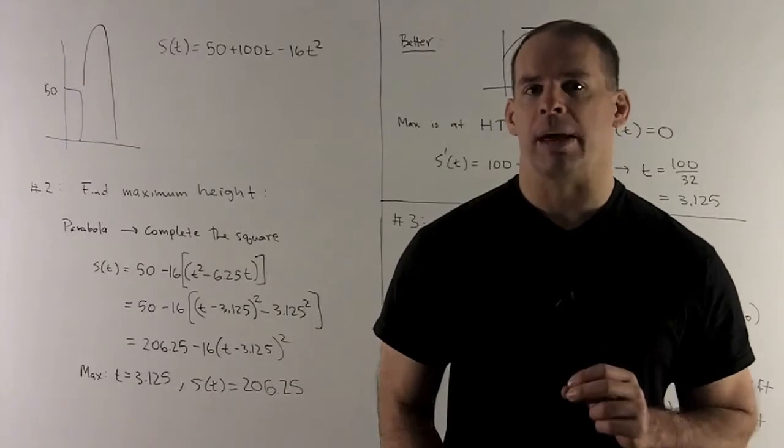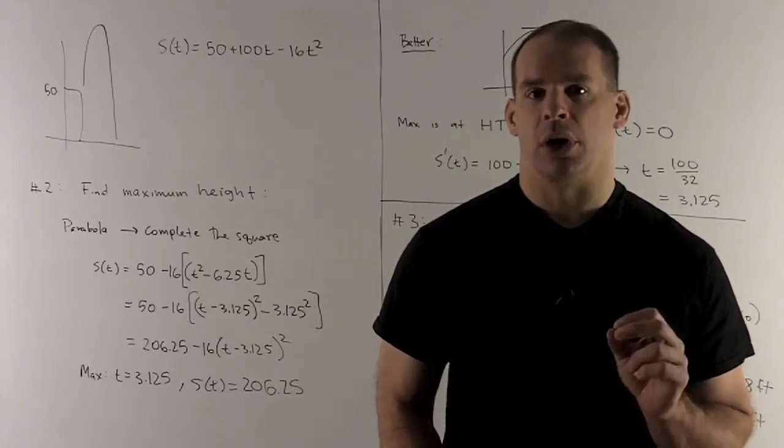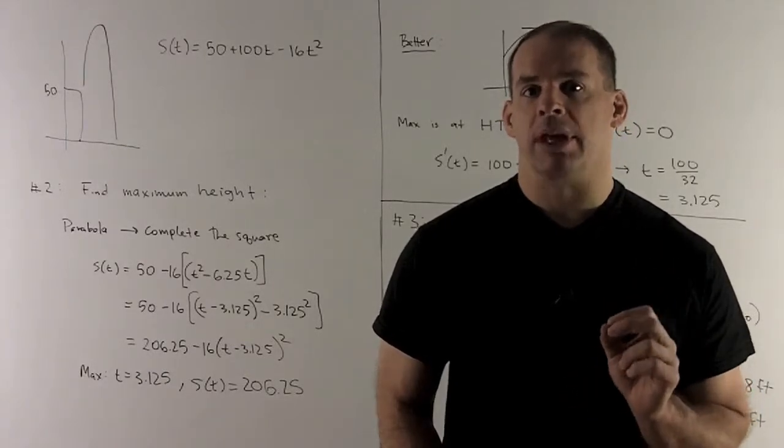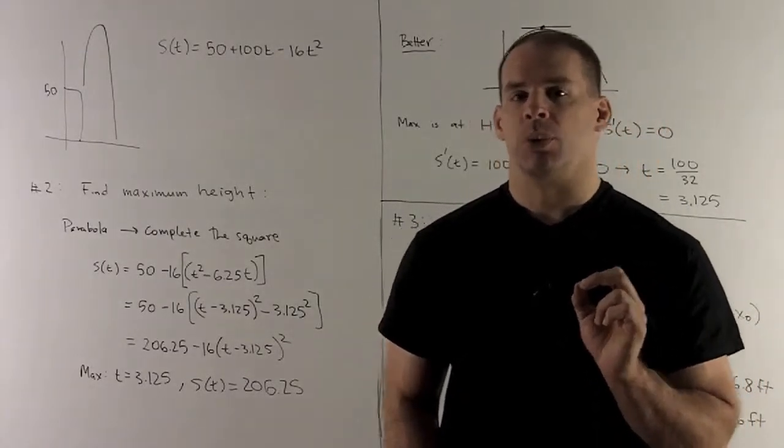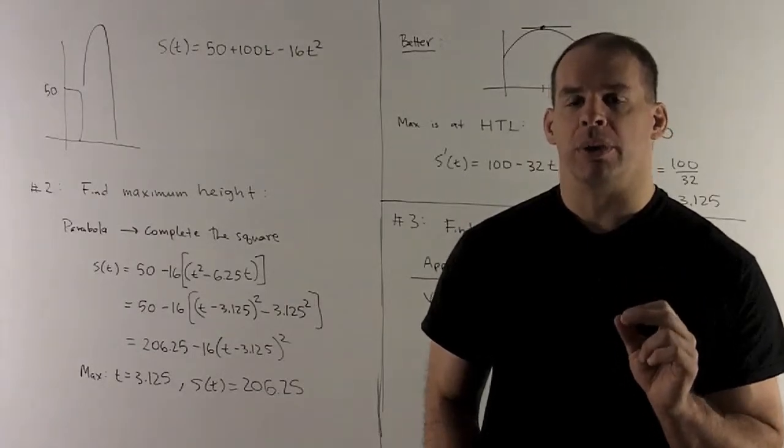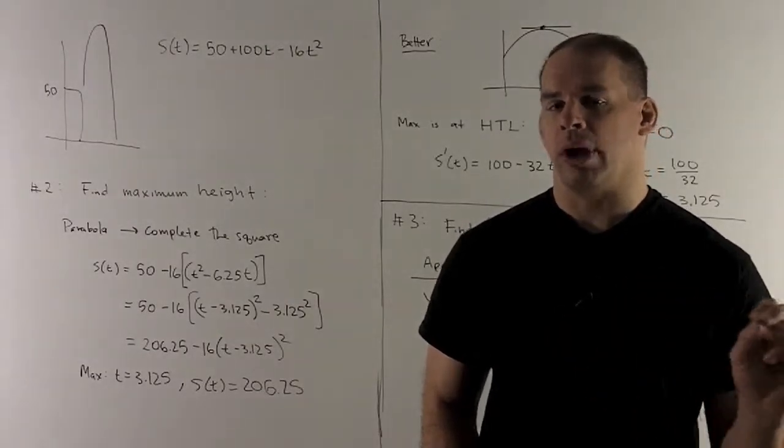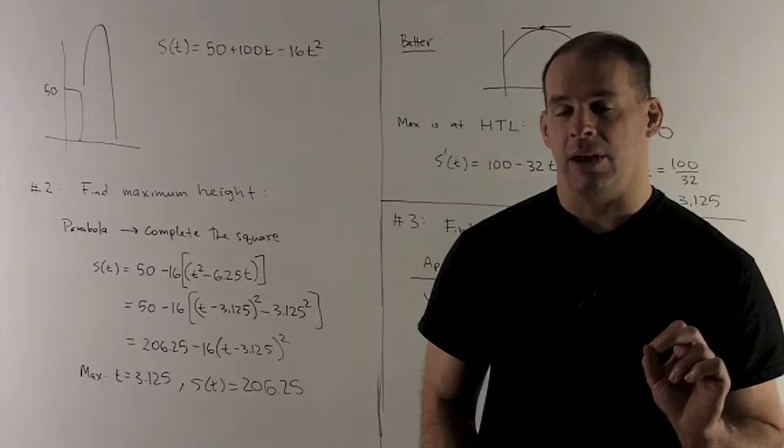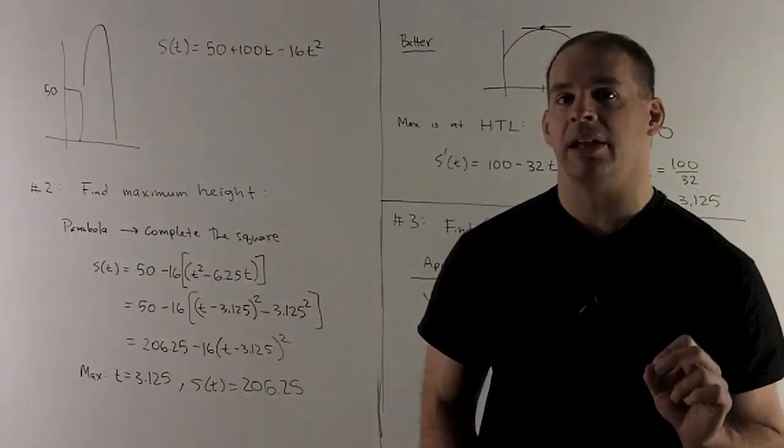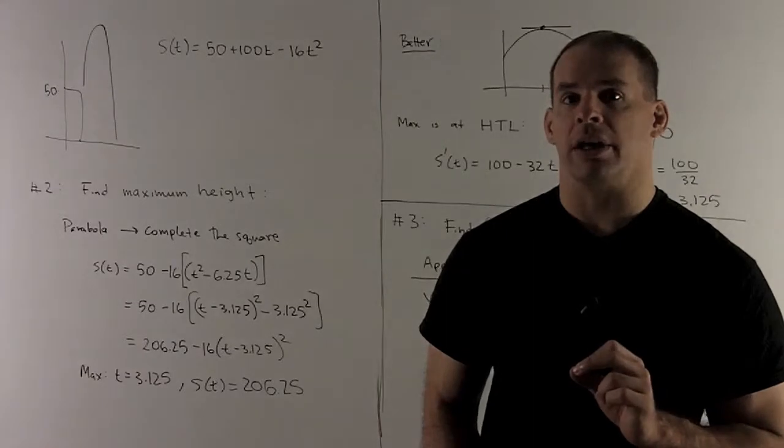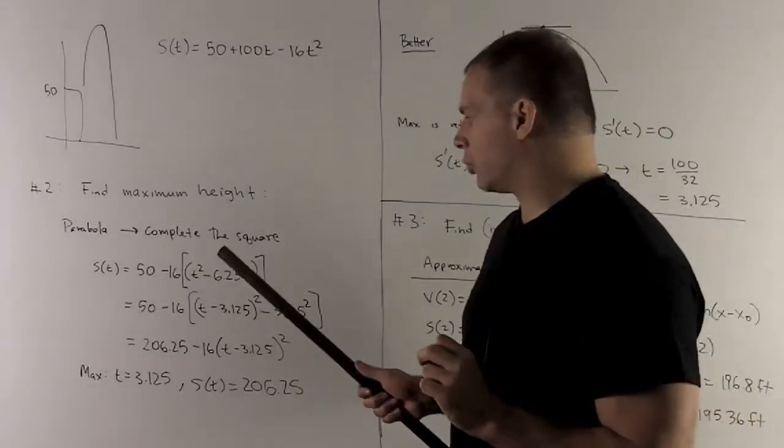Now let's see how we get that maximum height. So since I have the equation of a parabola, I can complete the square. So let's take a look at this. So what do we want to do? First thing I want to do is, I can move the 50 away from everything, and then I want to factor out 16 from the 100 so I can isolate the term with the t squared in it. So that's going to be right here.